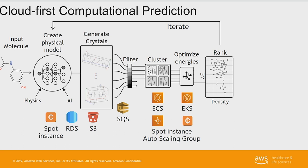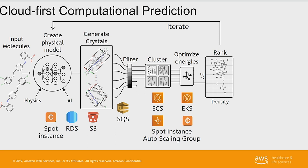For clustering, we use ECS, which is a Docker orchestration system built into Amazon, and it's given us a very nice ability to scale up to huge systems. Optimizing energies, which requires quantum mechanics calculations, is very expensive and time consuming. We use EKS — another Docker orchestration system but built into Kubernetes — which gives us more control over how we auto-scale spot instances. Spot instances are much cheaper, and EKS has let us use spot instances for 90% of our computations, which really brings down the cost and allows us to balance cost and time.